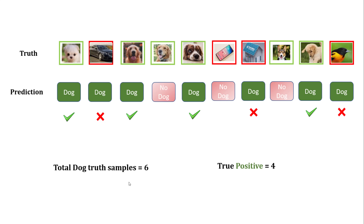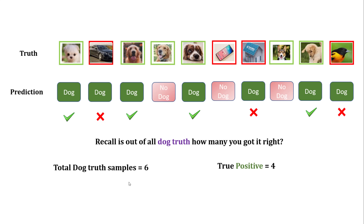Now let's talk about recall. When thinking about recall, you always think about truth as your baseline. In my truth, a total of six samples are dog samples, but when I predicted, I only got four correct predictions for dog.